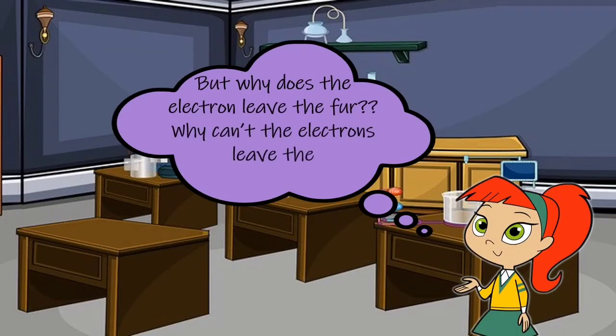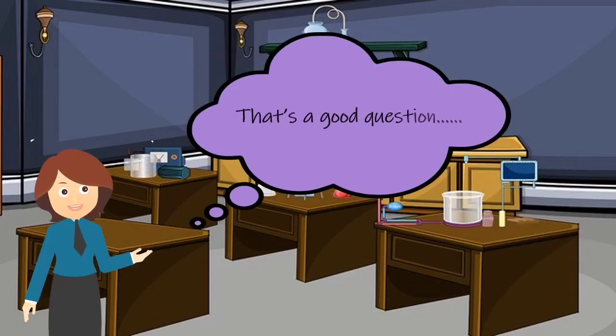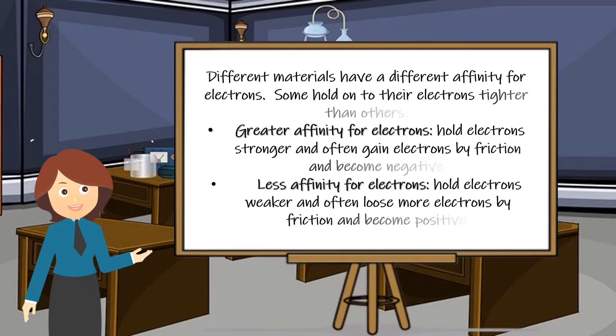But ma'am, why do the electrons leave the fur? Why can't the electrons leave the polythene rod? That's a good question. Different materials have different affinity for electrons. Some hold on to their electrons tighter than others. When a material has greater affinity for electrons, it holds electrons stronger and often gains electrons by friction and becomes negative. When a material has less affinity for electrons, it holds the electrons weaker and often loses more electrons by friction and becomes positive.